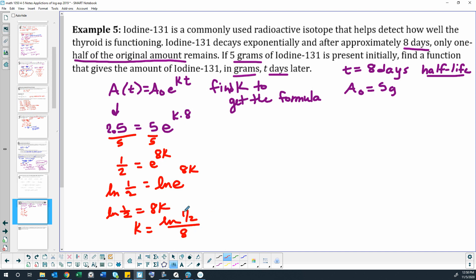Anytime you're doing a half-life it's always going to be natural log one half divided by the half-life. That's just always going to happen. It's kind of like you've made your own little formula, but if you don't want to memorize that little formula just make sure you know the process to get there.